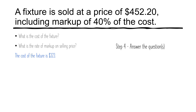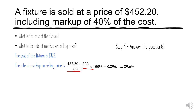There's a second question: what is the rate of markup based on selling price? To find the rate of markup based on selling price, you take the markup — which is $452.20 minus the cost of $323 — divide that by the selling price, multiply by 100%, and you get 0.296, or 29.6%.